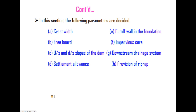In this section, the following parameters are decided: crest width, freeboard, upstream and downstream slopes of the earth dam, settlement allowance, cutoff in the foundation, impervious core, downstream drainage system, and provisions of freeboard.